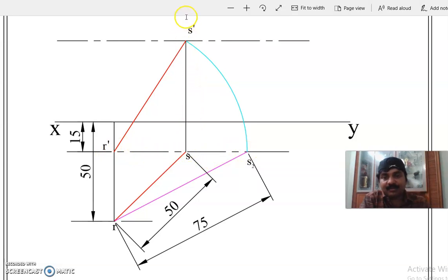S dash can be only on this projector. And also R dash S dash length has to be this much. So taking R dash as center, with the front view length, you rotate and cut the projector coming from S at S dash. So R dash S dash is the front view. RS is the top view.